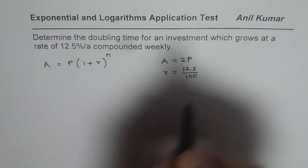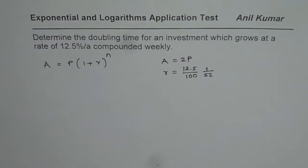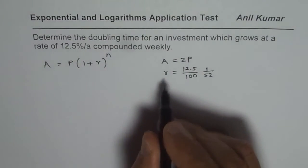As compounded weekly, that means one 52nd. In one year there are 52 weeks, so we have to divide this by 52. So that is the compounding interest rate i.